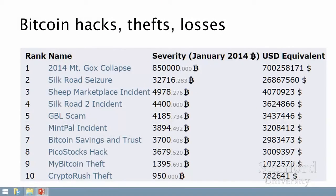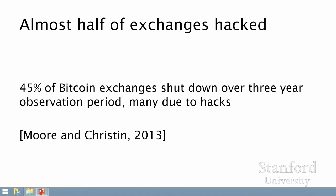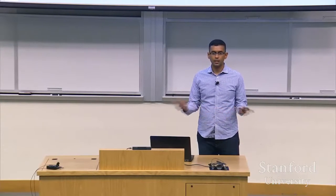Here is a list of all the most prominent hacks, thefts, and losses in the Bitcoin ecosystem. If you look at the right-hand column, you can see the US dollar equivalent of the Bitcoin value that was stolen. Bitcoin in terms of total monetary value is only a $5 billion system, so a large fraction of all Bitcoins that have ever existed have been stolen at least once. There's also a 2013 study showing that 45% of Bitcoin exchanges over a three-year observation period had been hacked at least once. Kaspersky Labs estimates there are hundreds of strains of malware that, when they infect your computer, immediately look for Bitcoin private keys and steal them instantaneously.